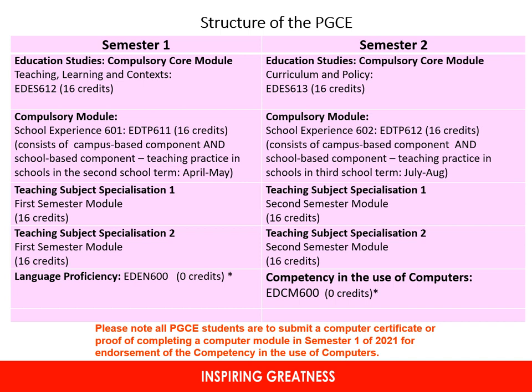The structure of the PGCE: in semester one you will register for five modules, and in semester two you will register for five modules. The language proficiency module ED EN 600 is a zero credit module — you must register for this module. You will not have any lectures for it, but you will be given an endorsement based on your matric or undergraduate certificate.